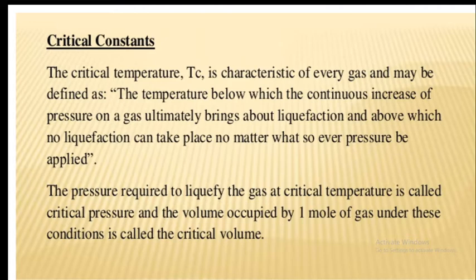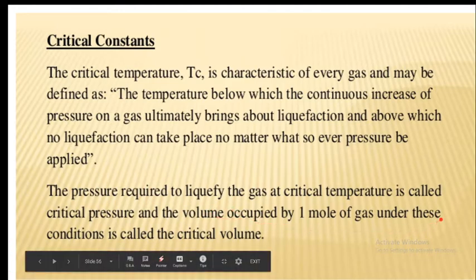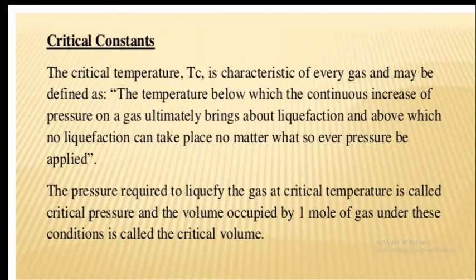At the critical temperature and pressure, the physical properties of the liquid and the gaseous substance become identical, and this state is called the critical state. The molar volume of the gas at the critical state is called critical volume — the volume occupied by one mole of the gas under critical temperature and pressure conditions. The critical volume is denoted by Vc, and for carbon dioxide, Vc is 95 cm³.